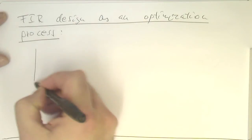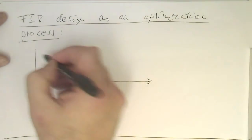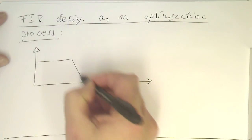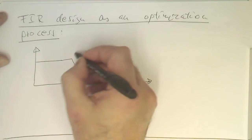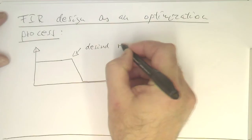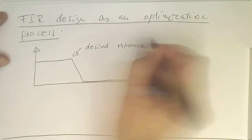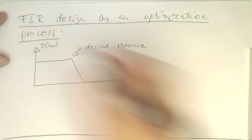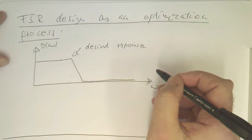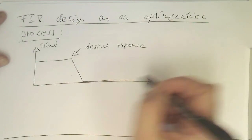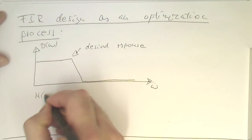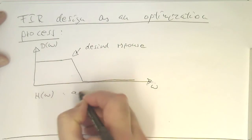Very simple. Imagine we define our ideal frequency response. Let's say this is our desired response. We call this d of omega. The actual response is just slightly different, so the h of omega is the actual response.